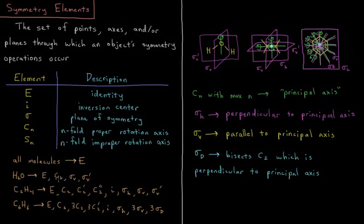For water, C2 is the principal axis, as I have indicated in green. For ethene, we have C2 is also the principal axis, but there are other C2s which are perpendicular to that. Benzene has a C6 axis, so C6 is its principal axis.